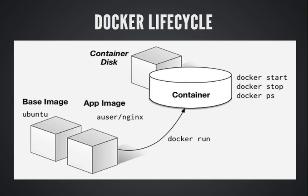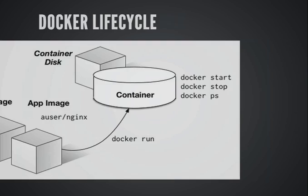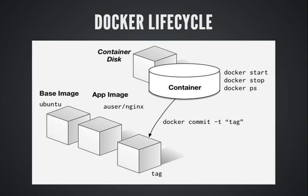When you take an image and run Docker run with that image name, it starts a container. A container is an image brought to life. As soon as you bring an image to life as a container, it gets its own file system and its own disk. Once a container is running, you manage containers with Docker PS. You can do Docker start and Docker stop to start and stop existing containers. Docker PS -a will show containers that aren't currently running; by default it just shows running containers.